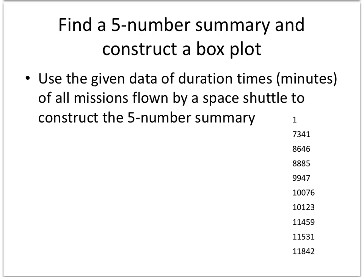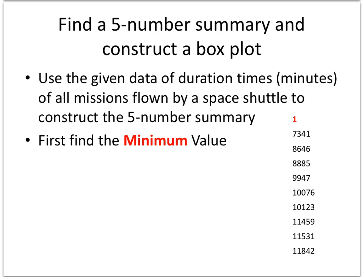So use the given data of duration times in minutes of all missions flown by a space shuttle to construct the five-number summary. Well, first you find the minimum value, so you just need to be sure they're in order and find the smallest value, which would be one.